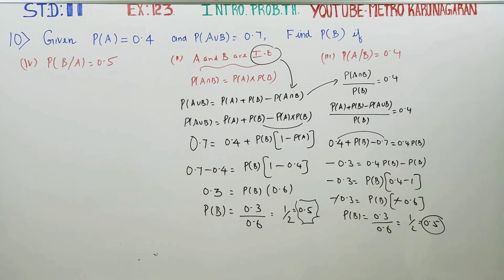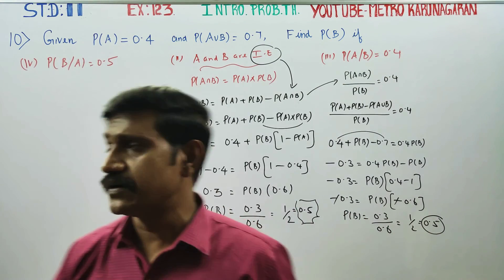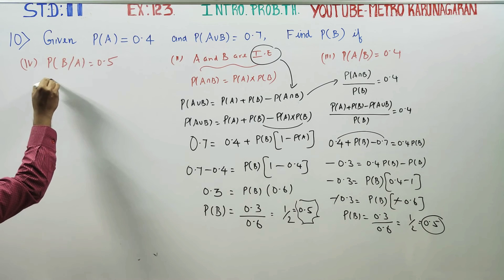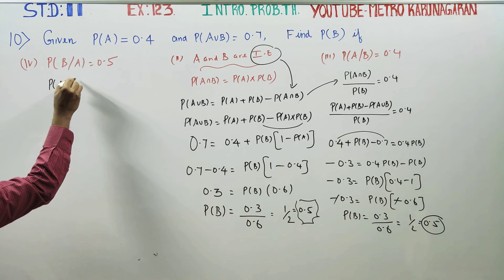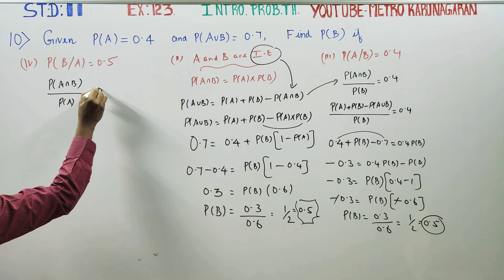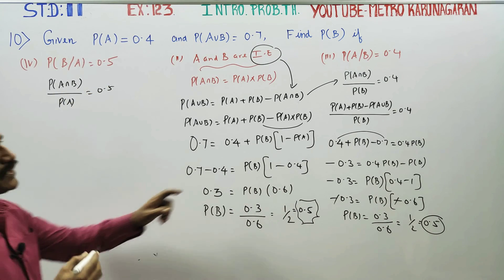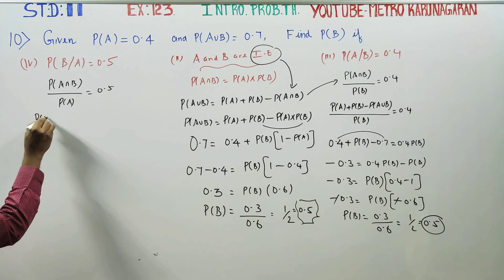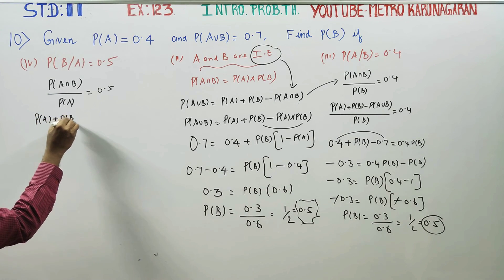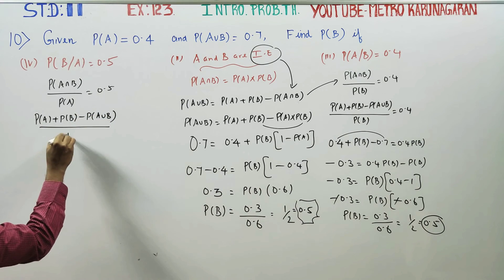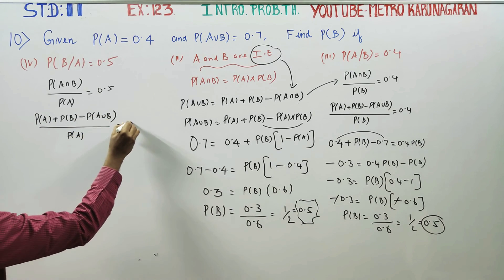Fourth subdivision: Probability of B given that A has already occurred is equal to 0.5. The formula is P(B|A) = P(A∩B) / P(A). Using the same intersection formula: P(A∩B) = P(A) + P(B) − P(A∪B). So P(B|A) = [P(A) + P(B) − P(A∪B)] / P(A) = 0.5.